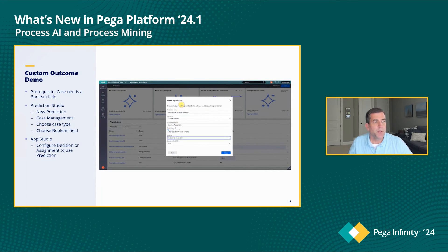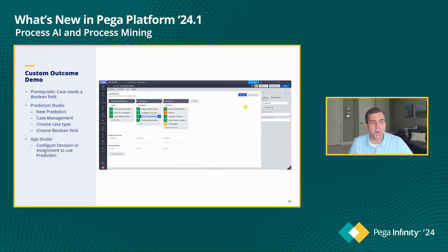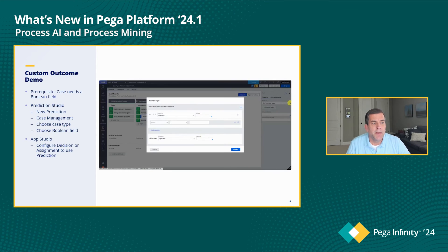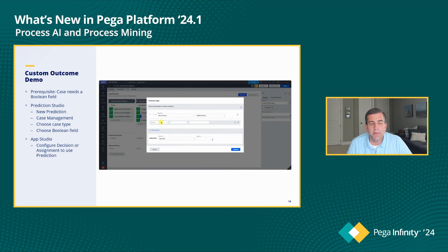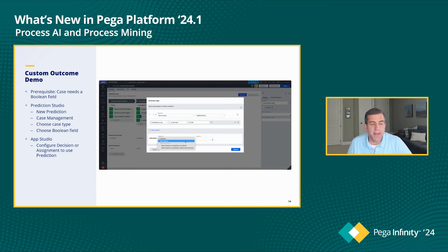With this in hand, we go back to our application and add new routing logic. We use business logic to configure this so that whenever an individual in any given workflow is predicted to have a high probability of not agreeing to the outcome, those cases are routed to a new high-risk queue. We've created a new work queue called High Risk Cases and are selecting customer agreement probability — if that value is less than 20 percent, it will get routed to this work queue. We then set up the alternate work queue where all other work, the ones where we expect customers will agree, will go to. And it's as simple as that.